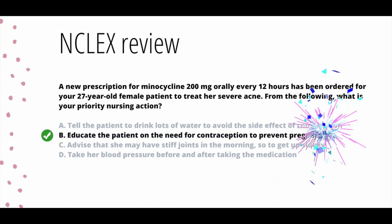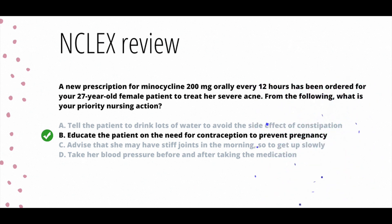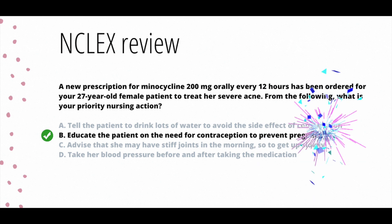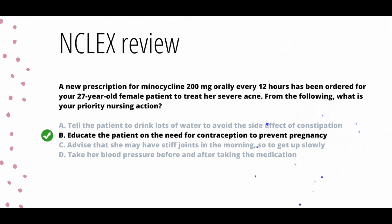If you selected B — educate the patient on the need for contraception to prevent pregnancy — you got it right! The others are incorrect because: A) we want patients to drink water, but the side effect is diarrhea, not constipation; C) we didn't discuss tetracyclines affecting the joints; and D) while nurses want to monitor blood pressure, it is not a required action for this drug.